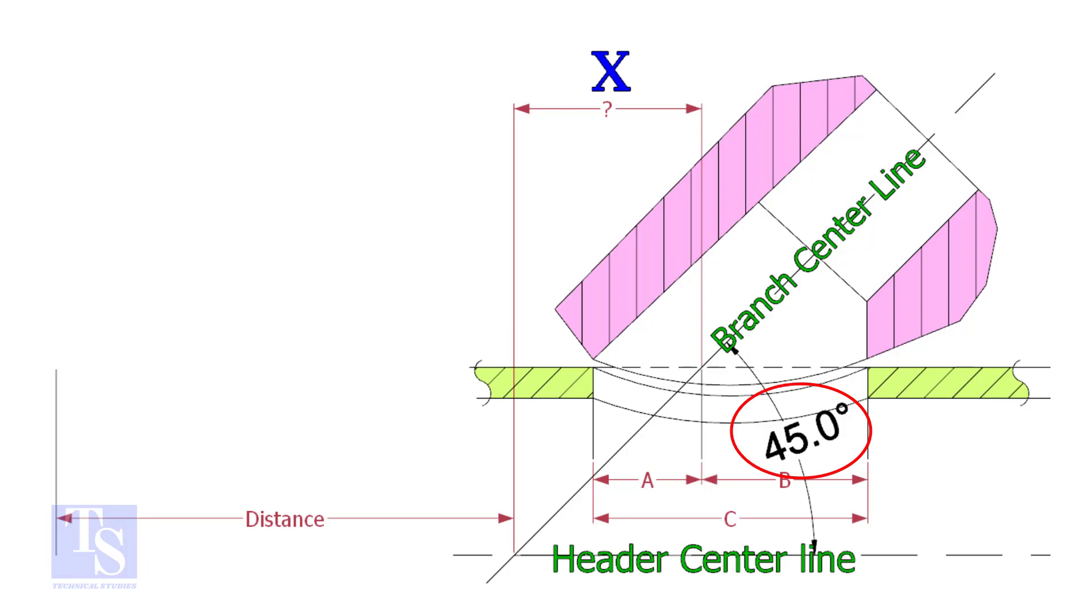If the including angle is 45 degree, the value of x will be always half OD of the header. Suppose the OD of the header is 400 millimeters, then the value of x will be 200 millimeters.